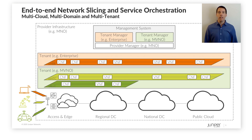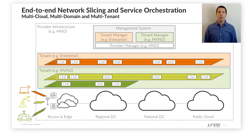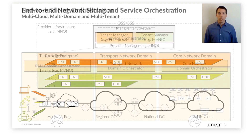The slices span over the multi-cloud and multi-domain telco environment, covering the access network, the edge, the transport network, and the various private and public clouds. Furthermore, multi-tenancy allows mobile network operators to capitalize on their unique positioning and offer true networking-as-a-service to their tenants, such as enterprises and MVNOs. Let's have a look at the architecture to support that.